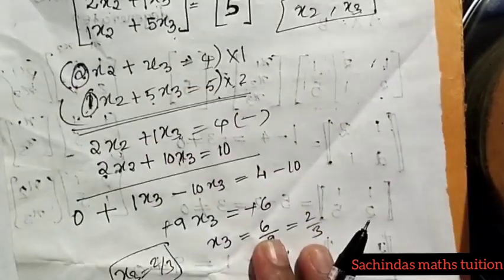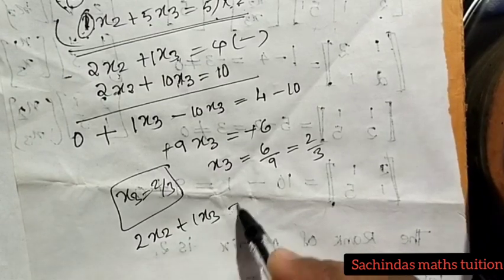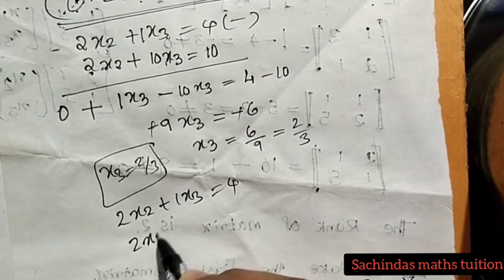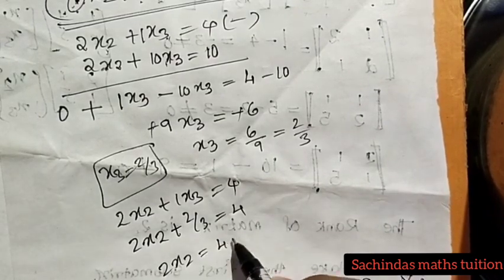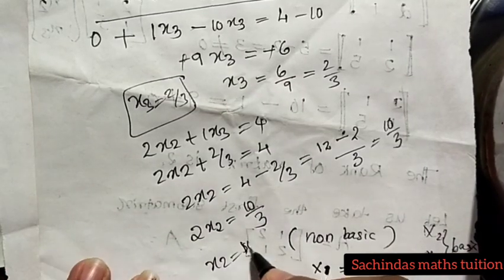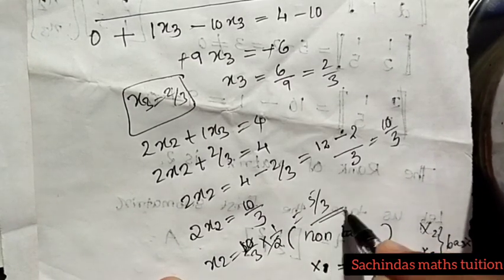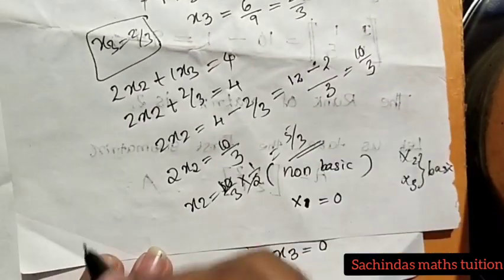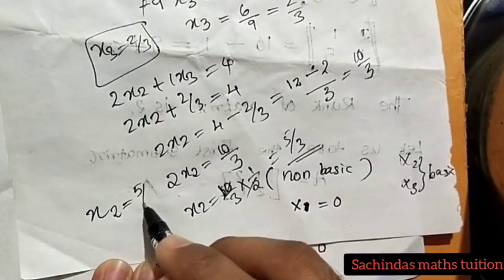Now x3 equals 2 by 3. Substituting back, x2 equals 10 by 3. We also get x2 equals 5 by 3 and x3 equals 2 by 3 for the solution.